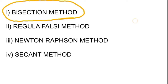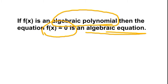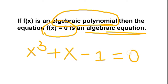Before that, I would like to tell you what is an algebraic equation and what is a transcendental equation. The equation f(x) = 0 is called an algebraic equation when f(x) is an algebraic polynomial. For example, x³ + x − 1 = 0, where f(x) = x³ + x − 1 is an algebraic polynomial. When f(x) = 0 and f(x) is an algebraic polynomial, then it is called an algebraic equation.